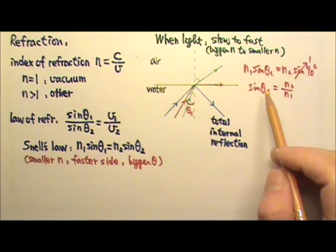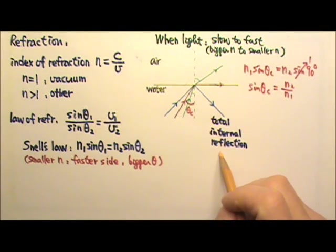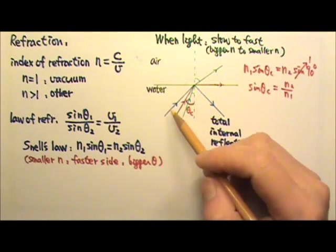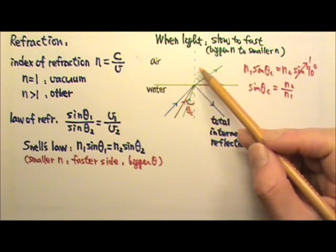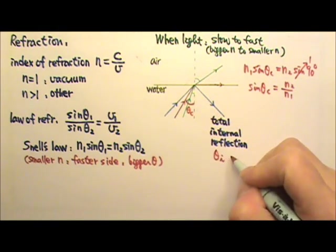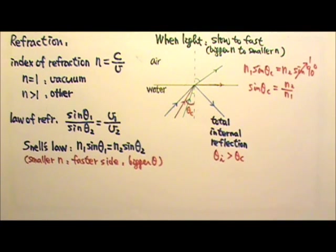And we only have total internal reflection when n2 is smaller than n1, when light is going from a slower medium to a fast medium. And the total internal reflection happens when the angle of incidence is bigger than the critical angle.